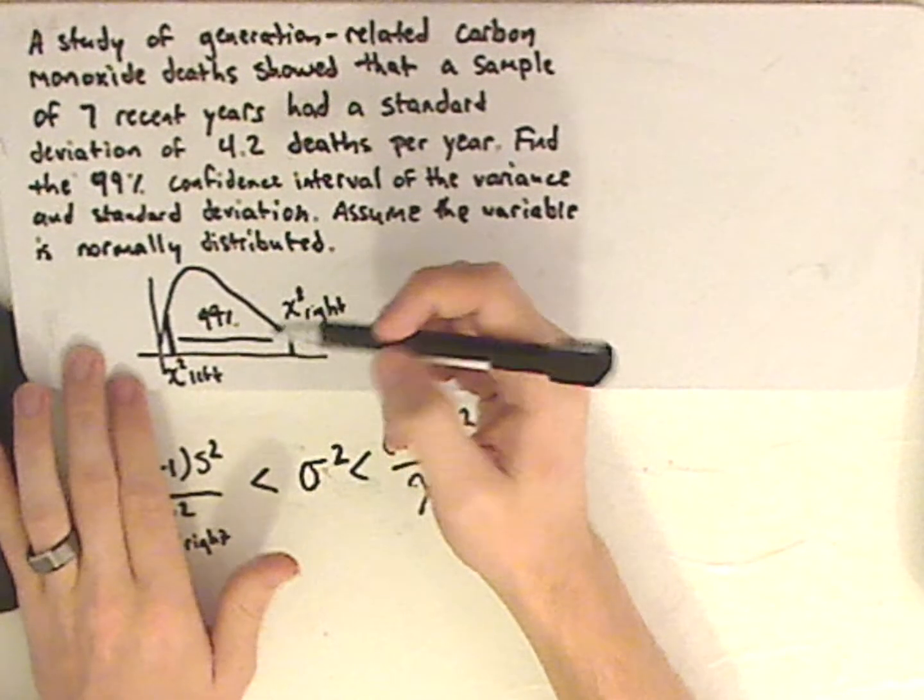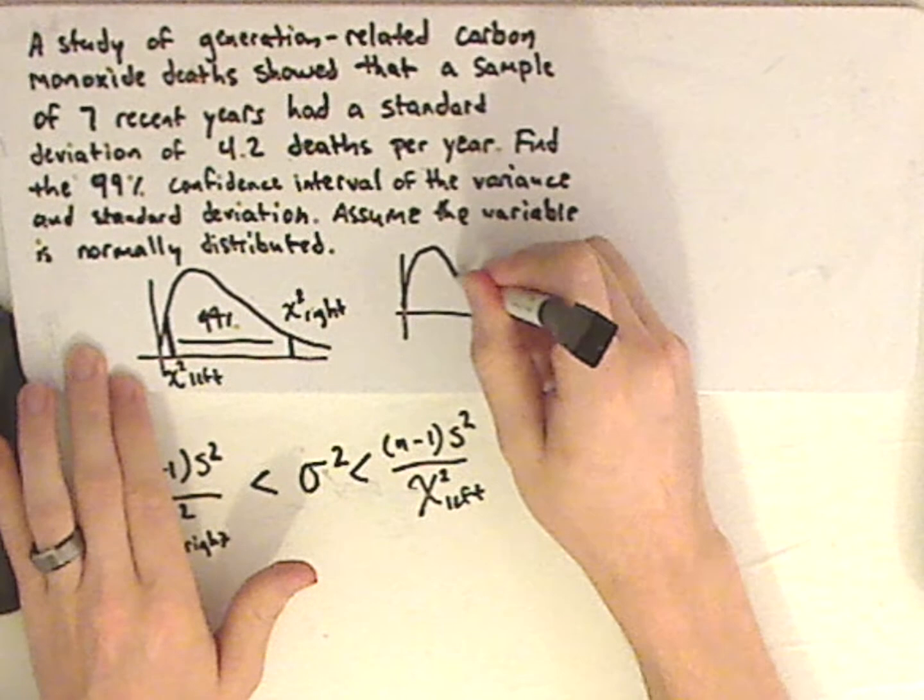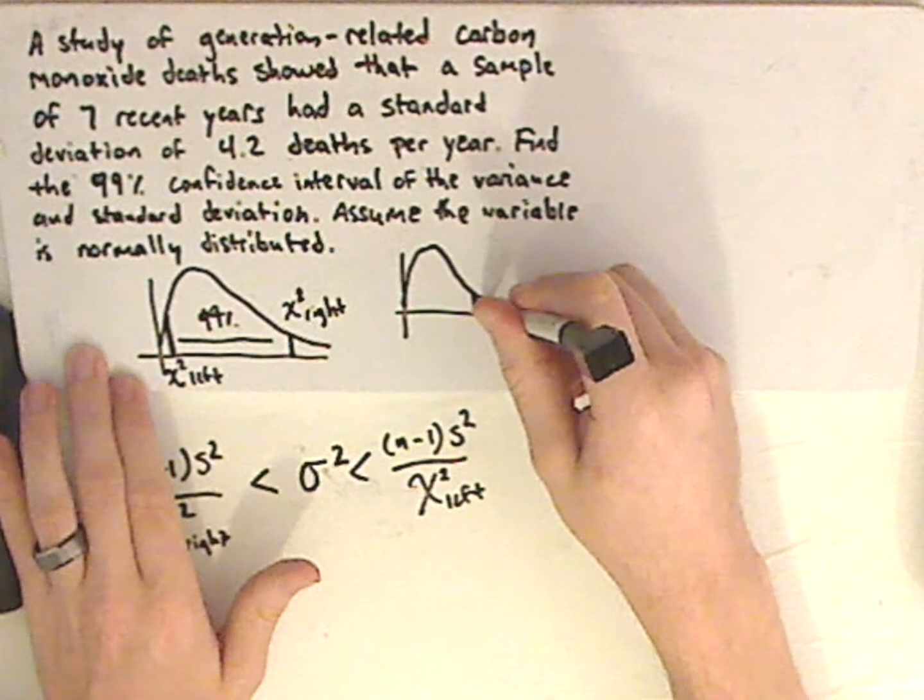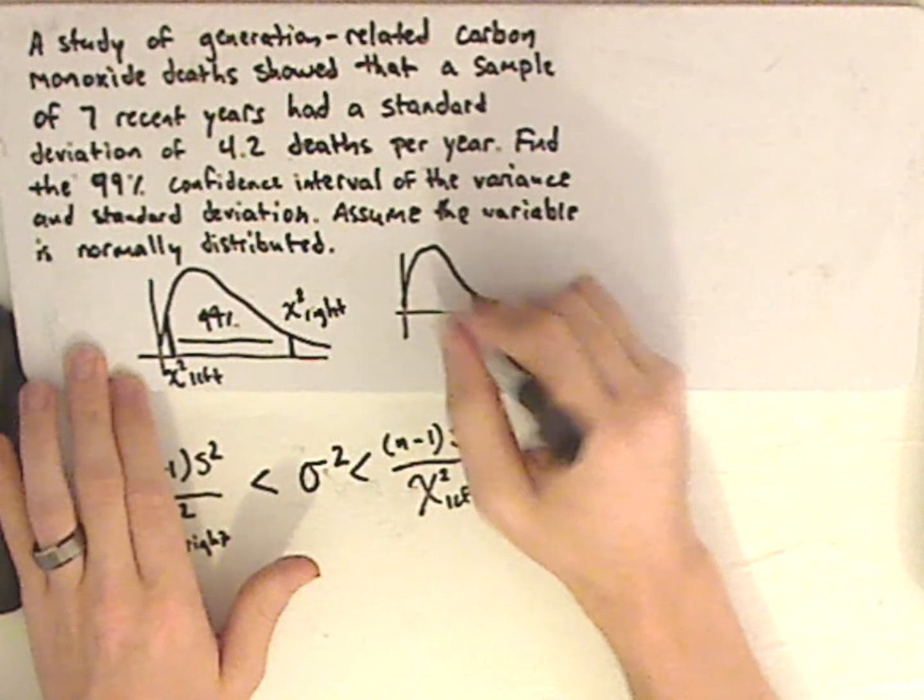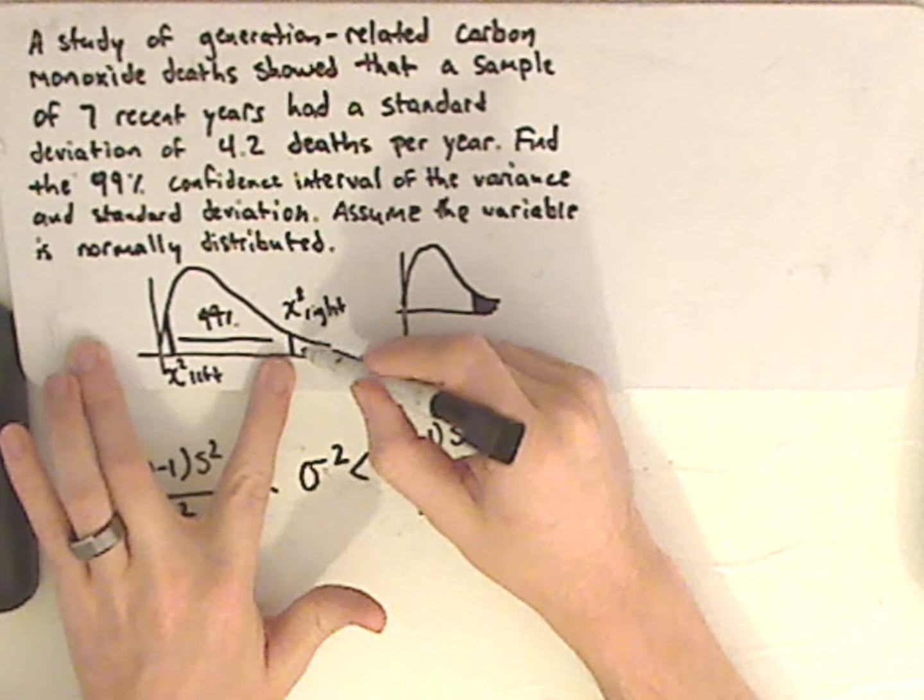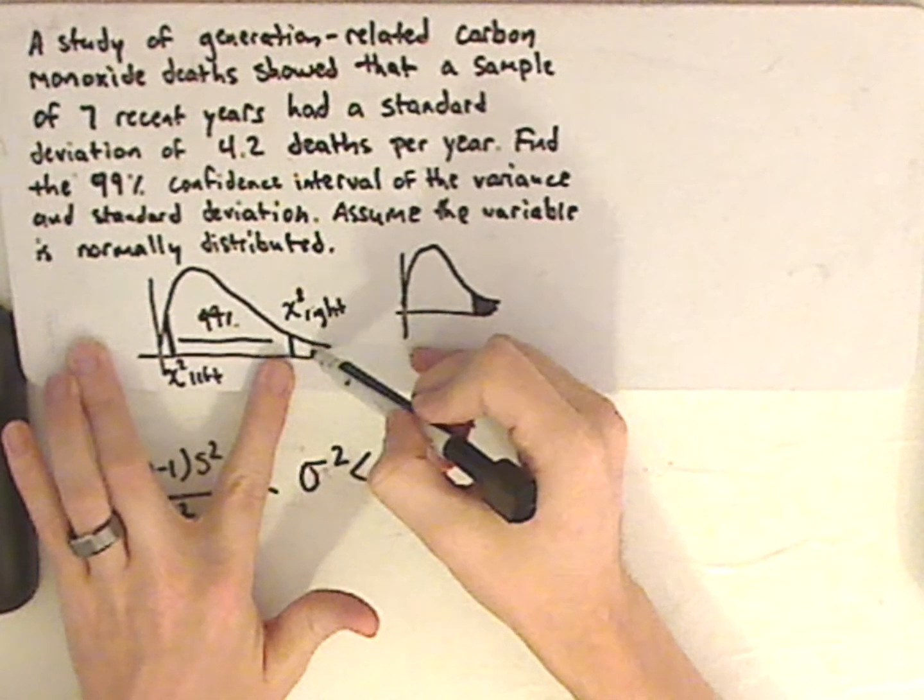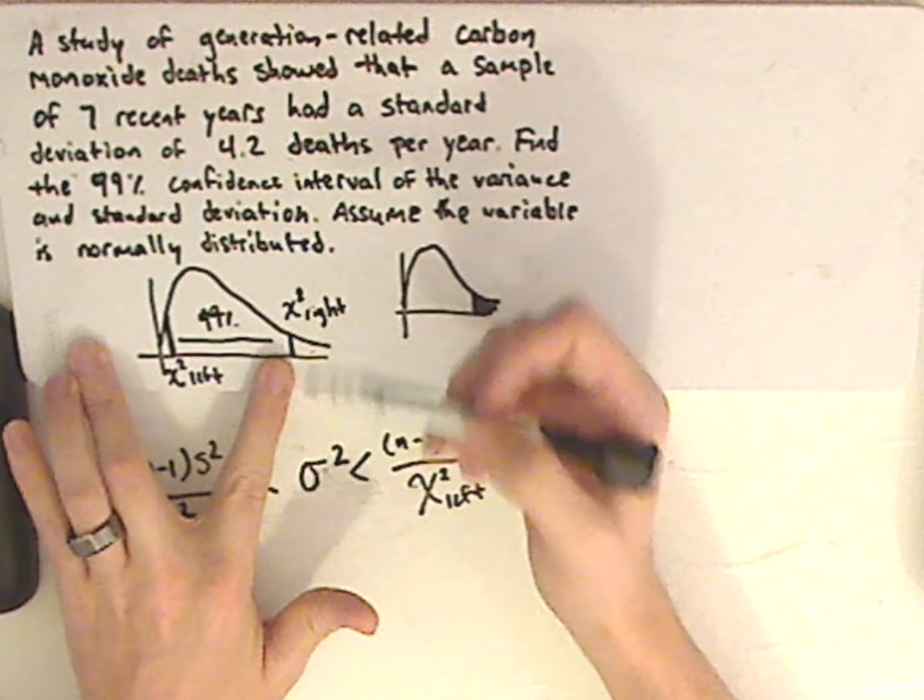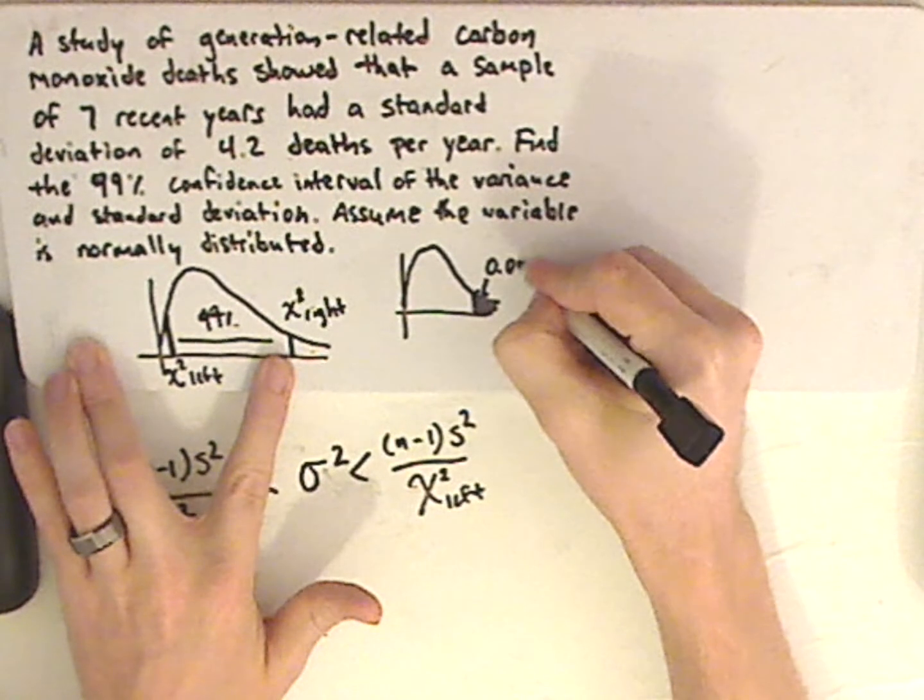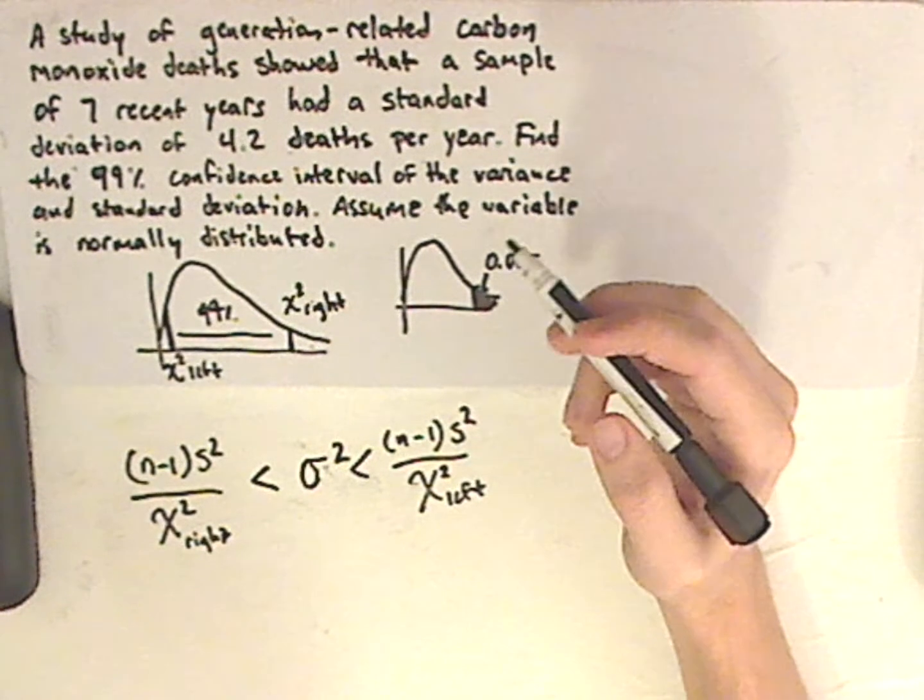However, when you look at your table in the back, normally you have the area that you need. So let's first find this area. This area is going to look just like the table. This area plus this area equals 1%. Half of 1% would be 0.005. So look that up in your table.